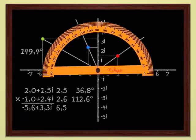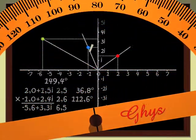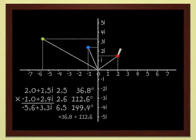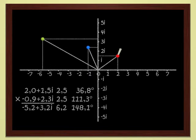And for the product, the green point, we get 149.4 degrees. That is, the sum of the arguments of the two numbers. When we multiply two complex numbers, moduli are multiplied and arguments are added.